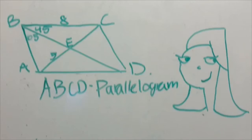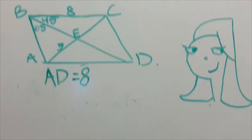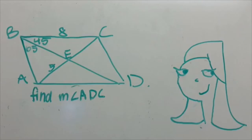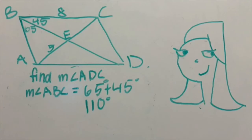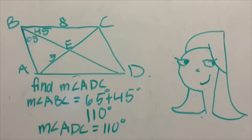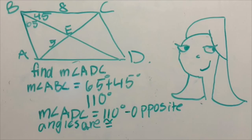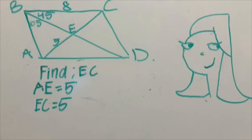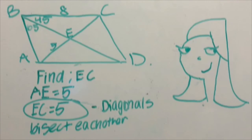Let's try it out. If ABCD is a parallelogram, let's find these values. To find AD, we know that BC is 8, so AD would also be 8 because opposite sides are congruent. To find the measure of angle ADC, we find 65 plus 45 is 110, and since opposite angles are congruent, ABC and ADC are the same, so angle ADC is 110. To find EC, AE equals 5, so EC equals 5 because diagonals of a parallelogram bisect each other.